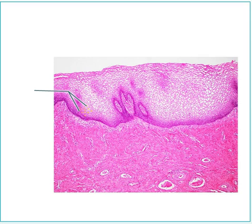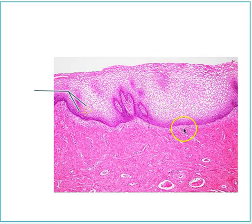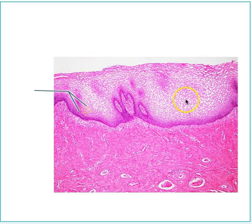Let's identify the tissue type and let's identify where in the body we would expect to find it. I see thin, flat cells stacked on top of each other. Because they're stacked on top of each other, I know it's stratified. Because it's thin, flat, and scale-like, this is squamous. So this must be stratified squamous epithelium. I don't see keratin at the top, but this looks to me to be thin skin.